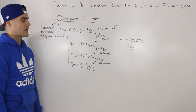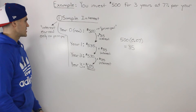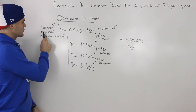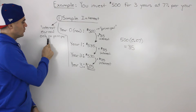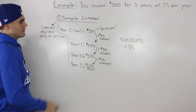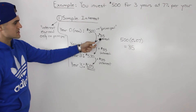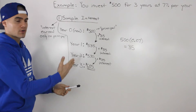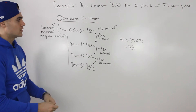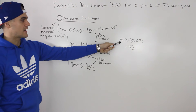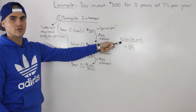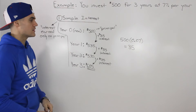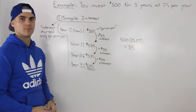The definition for simple interest is basically the interest earned only on the principal amount. Notice this $35 interest earned every year was based on that initial $500 we put into the bank account.